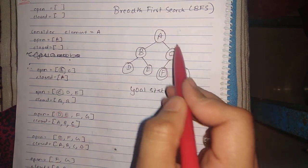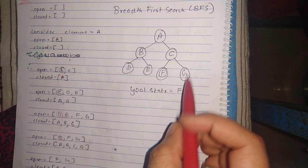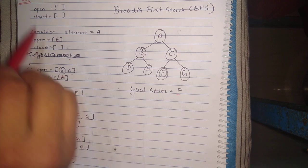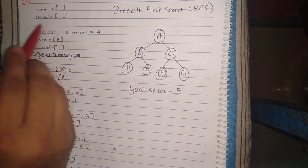There is a tree given over here and we have to find the path to the goal state. Our goal state is given to be F.